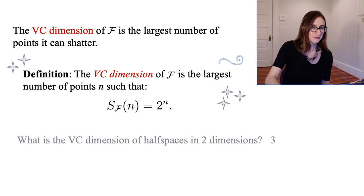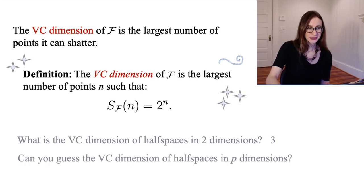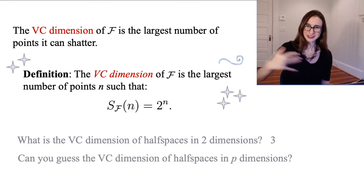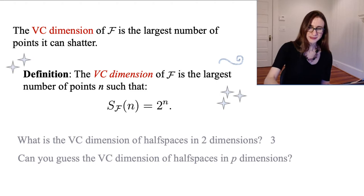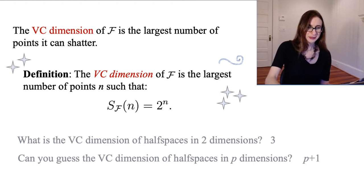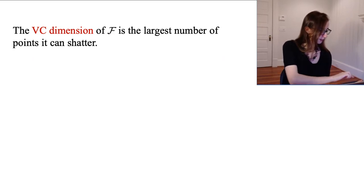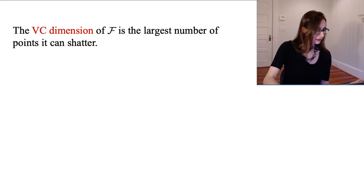You might ask: what is the VC dimension of half spaces in P dimensions? If we're actually in P dimensions and we use classifiers that are half spaces — hyperplanes — you could follow the pattern and say P+1. And if you guess that, you would be correct.